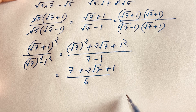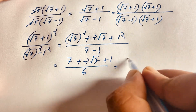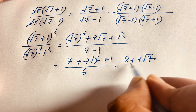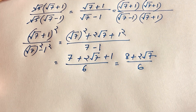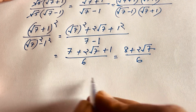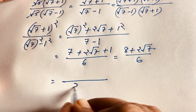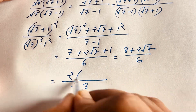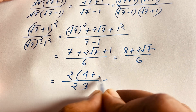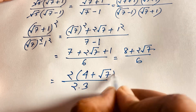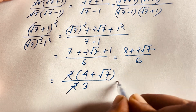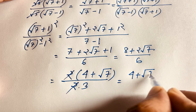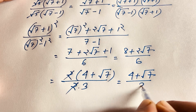So this gives us 8 plus 2 square root of 7, over 6. I can factor 6 as 2 times 3, and 2 is common in the numerator giving 4 plus square root of 7. Canceling the 2, our final answer for Method 1 is 4 plus square root of 7, over 3.